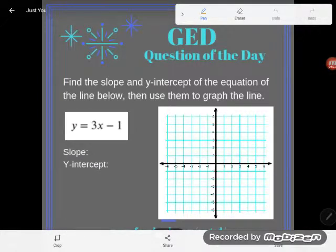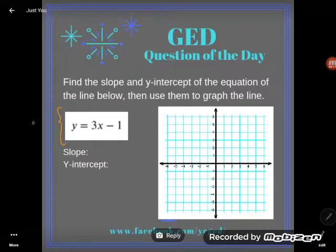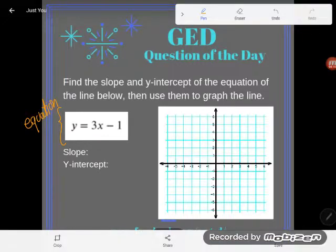Hey GED students, it's GED question of the day and our problem here says find the slope and y-intercept of the equation of the line below. Here's the equation. So we're going to find the slope and y-intercept of that, then we're going to use them to graph the line.